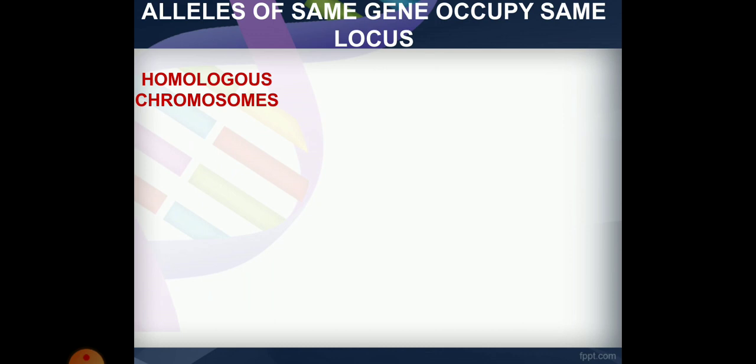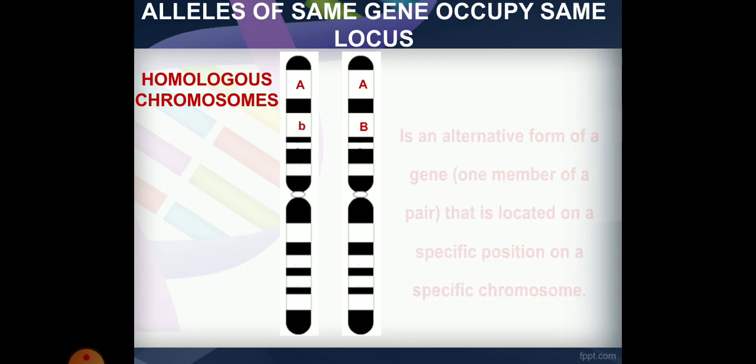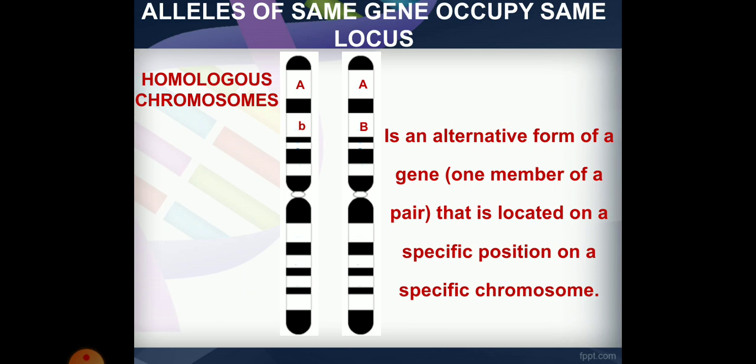A gene on a homologous chromosome occupying the same locus is called an allele. An allele is an alternative form of a gene located at a specific position on a specific chromosome.